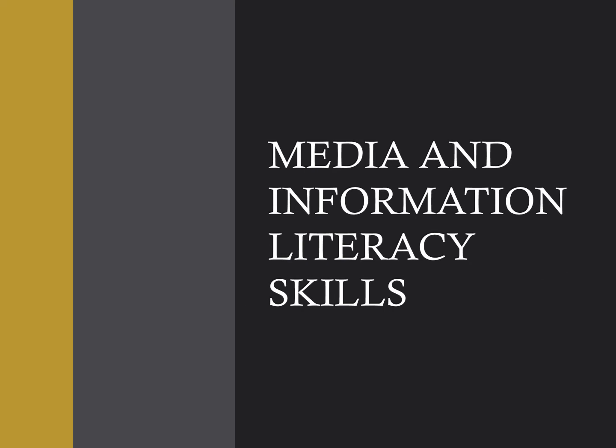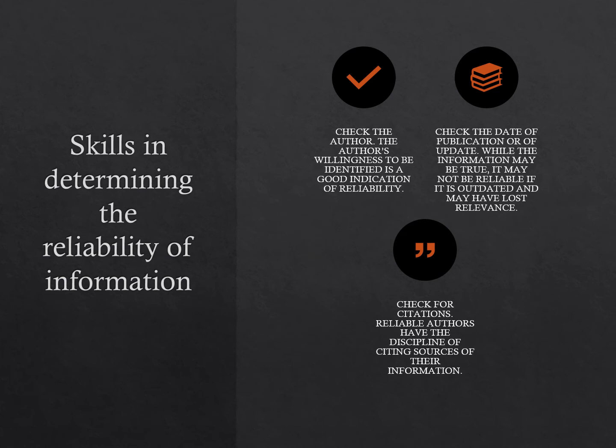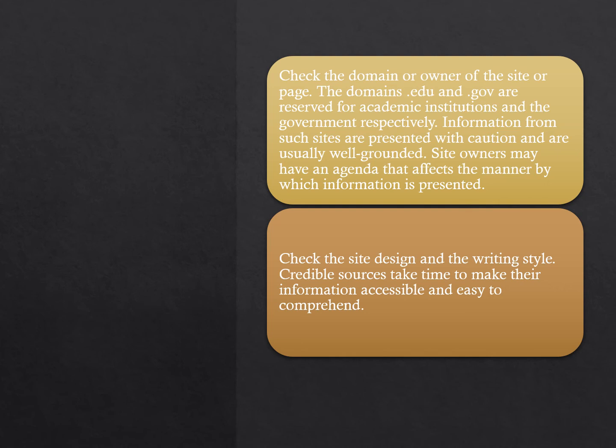Skills in determining the reliability of information: Check the author — the author's willingness to be identified is a good indication of reliability. Check the date of publication or update; while information may be true, it may not be reliable if it is outdated. Check for citations, as reliable authors have the discipline of citing sources. Check the domain or owner of the site — domains .edu and .gov are reserved for academic institutions and the government, and information from such sites is usually well-grounded. Site owners may have an agenda affecting how information is presented. Check the site design and writing style, as credible sources take time to make their information accessible and easy to comprehend.